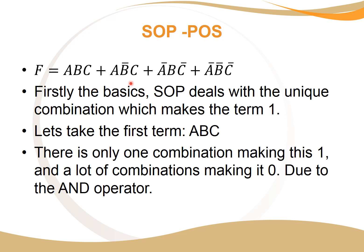First it's important to understand what SOP is. With SOP standard form, we look at ones because there's only one unique combination for a term to be one. If A is one, B is one, and C is one, then this term is one. But if A, B, or C are zero, it doesn't matter what the other variables are — the result will be zero. So there's only one unique combination which makes this one, and that's what we want.